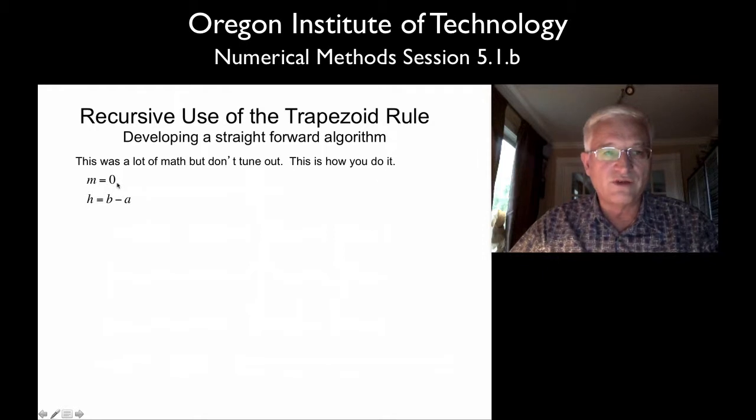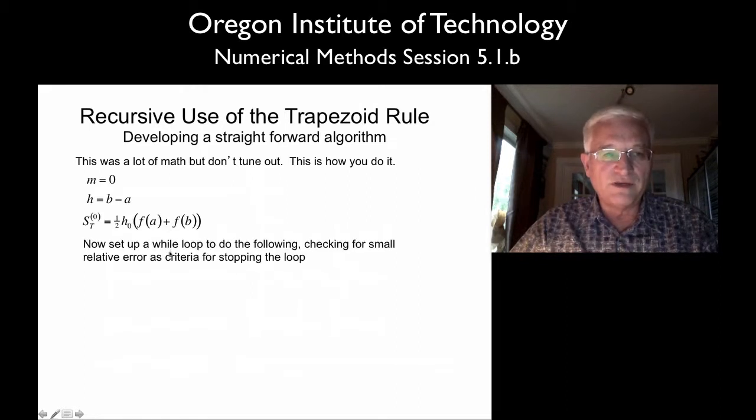We'll start with iteration zero, recursion level zero. We'll start with the entire interval for h, and we will create what we know to be the full trapezoid rule across the entire interval. Now we'll set up a loop, and we'll need to repeat until we get the sufficient relative error that we're looking for.